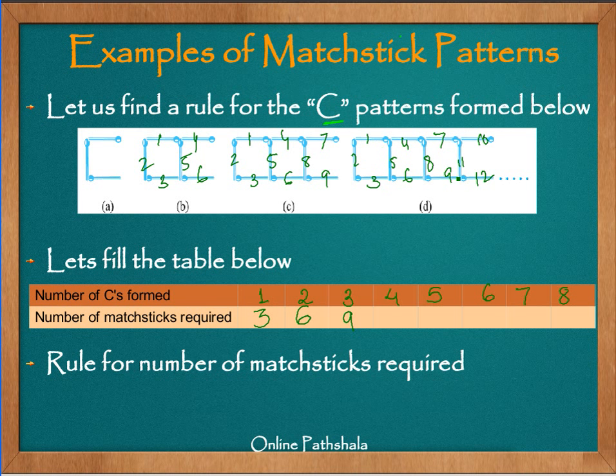This is a tedious way of counting, but it's just to reinforce the concept that we are doing all these things manually if we don't have the rules. So for 4, we need 12. Now you can pretty much see a relation between the number of Cs formed and what is required. You can see that 1 times 3 is 3, 2 times 3 is 6. Similarly, if I want 5 Cs, I need 15 matchsticks. If I want 6, I will need 18. If I want to make 7 Cs, we need 21. And if I want to make 8 C patterns, then we need 24 matchsticks.